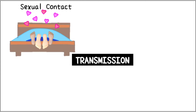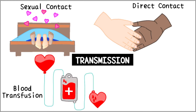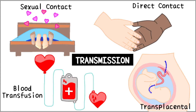Syphilis can be transmitted through any form of sexual contact and it is not limited to intercourse. It can also be spread by direct contact in its most infectious phase, i.e. secondary syphilis. In such cases, the chancre is extragenital. Another method of transmission is through contaminated blood transfusion. In this case, the chancre is absent. Syphilis can also be passed down to the fetus through the transplacental route.